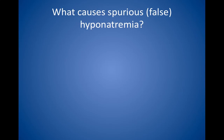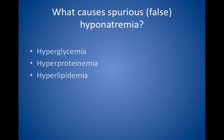What causes spurious or false hyponatremia? Hyperglycemia can do it. Once glucose is greater than 200 mg per deciliter, the sodium value decreases by 1.6 milliequivalents per liter for each rise in 100 mg per deciliter in glucose. Make sure you know how to make this correction. Other causes of false hyponatremia include hyperproteinemia and hyperlipidemia. In these instances, the laboratory value is low, but the total body sodium is normal — do not give the patient extra salt or saline.